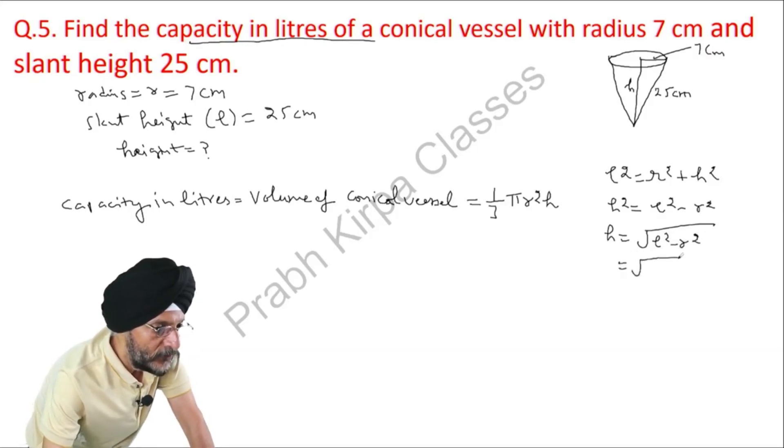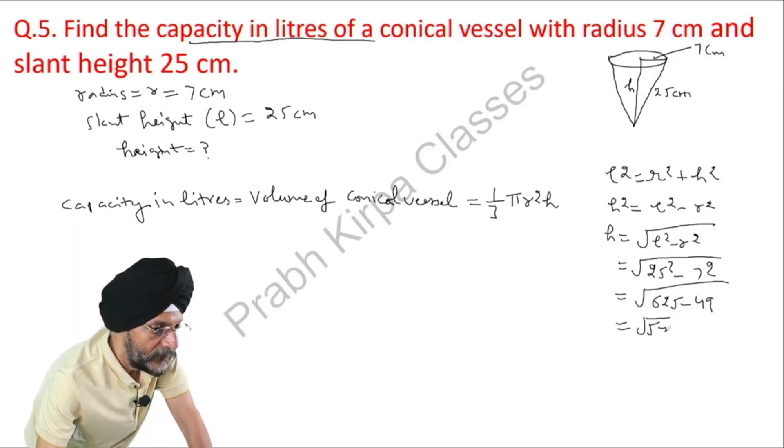We will fill out the relevant values. What is the value of L? It is 25. What is the value of r? It is 7. 625, 49. It will come as 576. Then answer is here. Value of height is 24 meter.